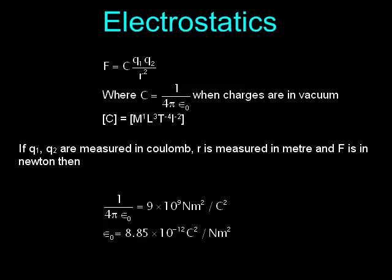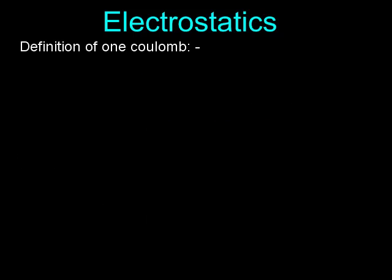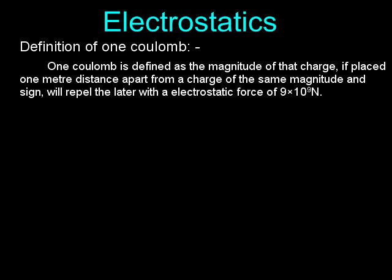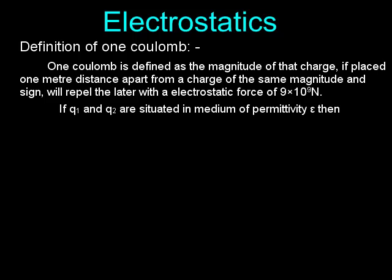ε₀ = 8.85 × 10⁻¹² C²/(Nm²). Definition of 1 Coulomb: 1 coulomb is defined as the magnitude of that charge which, if placed 1 meter apart from a charge of the same magnitude and sign, will repel it with an electrostatic force of 9 × 10⁹ N.